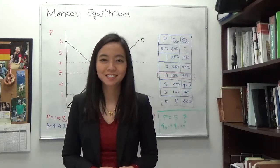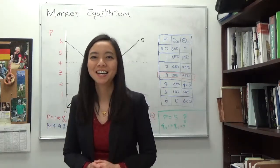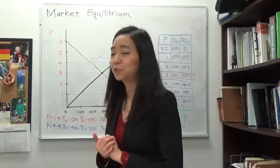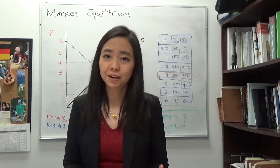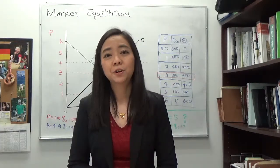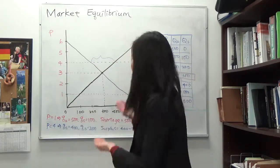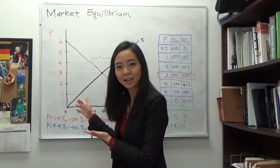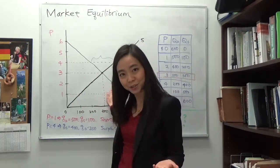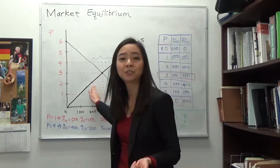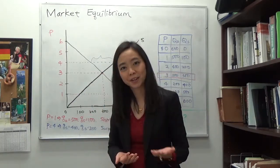Hello everyone, my name is Iris Franz and today we're going to talk about market equilibrium. Remember in the previous several videos we talked about the market — a group of buyers and sellers who together determine equilibrium price and quantity. We put together our demand and supply curve. Demand tells you the story from the buyer side and supply tells you the story from the seller side. Together they determine market equilibrium.